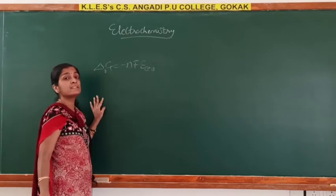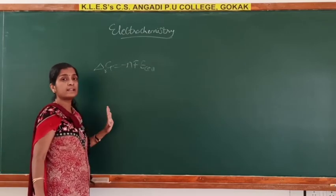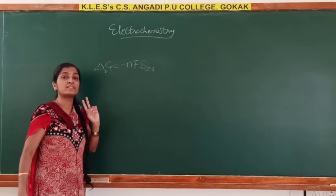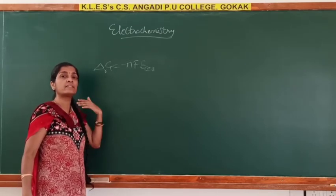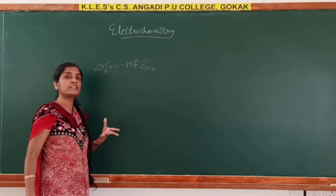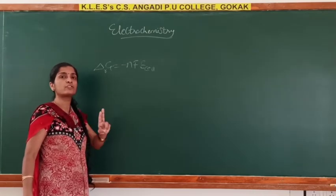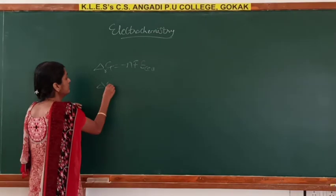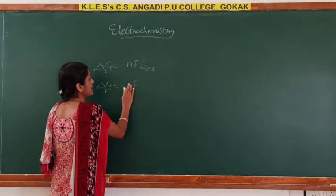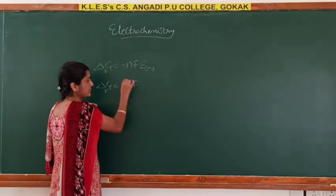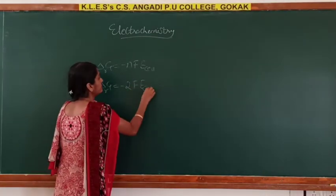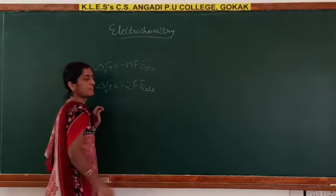In the case of the Daniel cell, which is made up of two half cells — the zinc half cell and the copper half cell — two moles of electrons are involved in the reaction. So the formula becomes delta G_r equals minus 2F times E_cell.